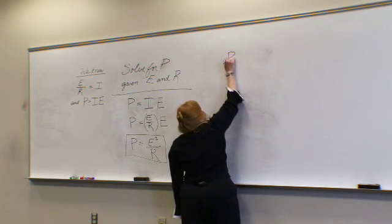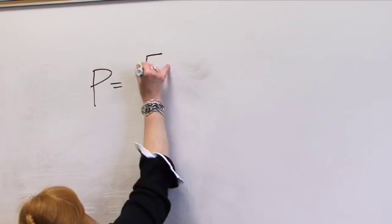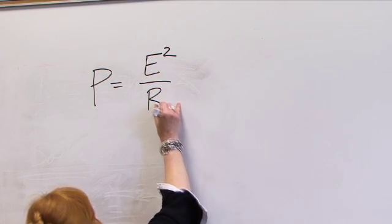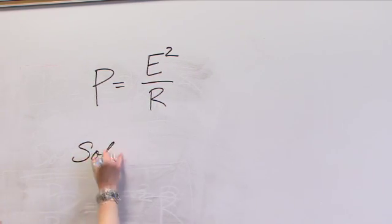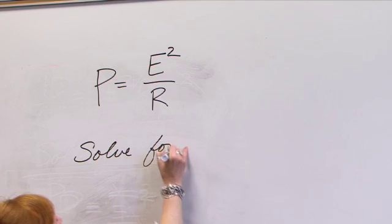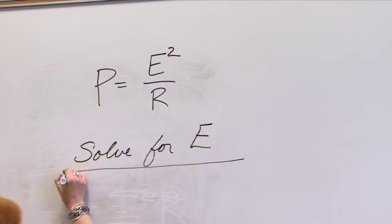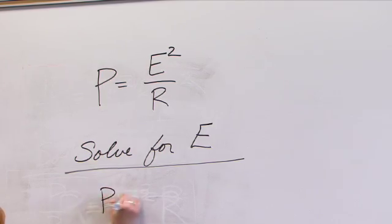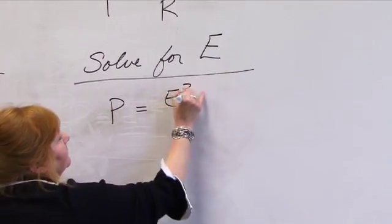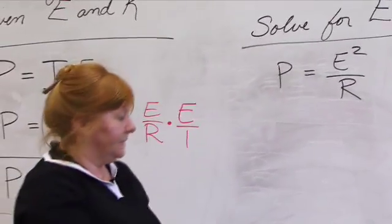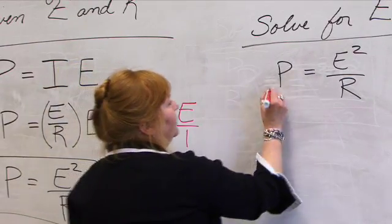We have P is equal to E squared over R. Let's first solve for E. I take what's given.